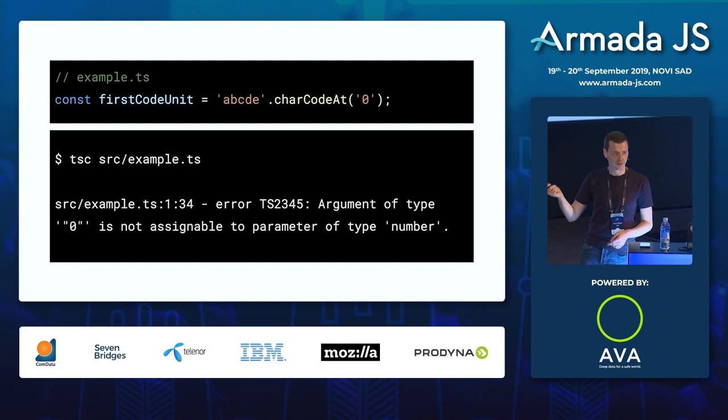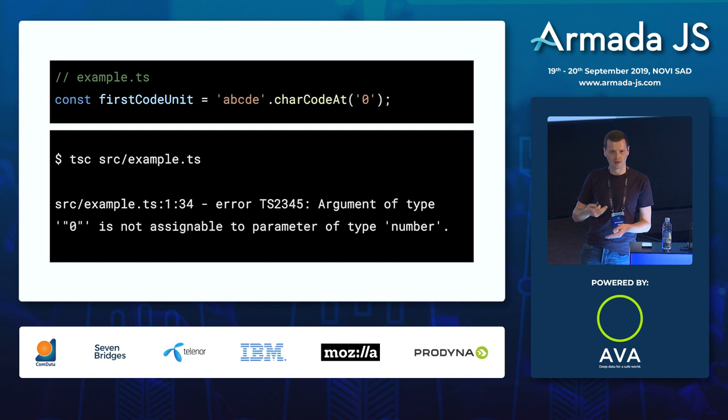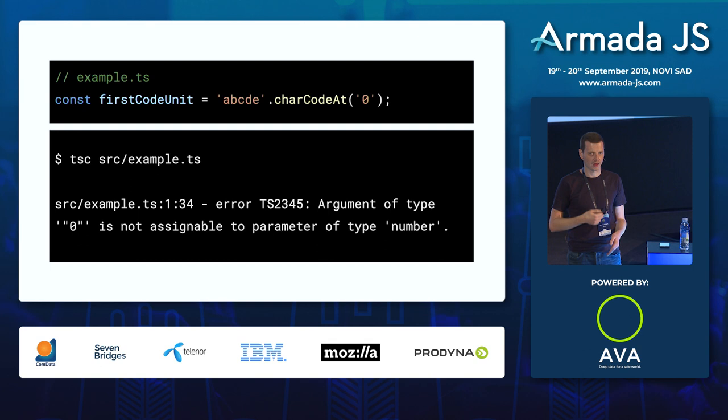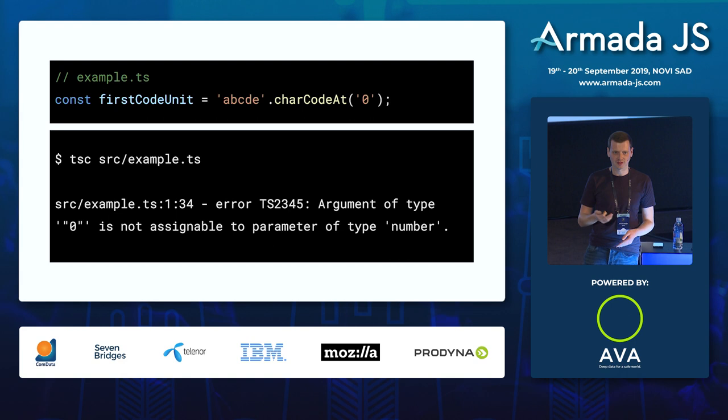When we run TSC — the TypeScript compiler — against this example, you will see a compile time error: an argument of type zero, which is a string literal, is not assignable to a parameter of type number. In a larger scale code base, this saves us a lot of headaches, and we can get this diagnostic information much earlier before we start debugging at runtime in the browser or in Node.